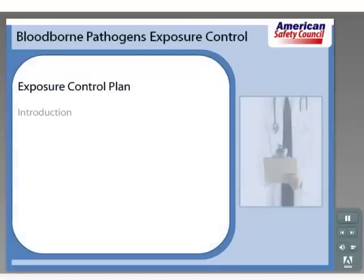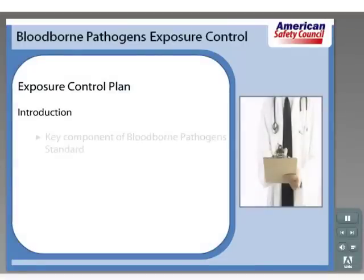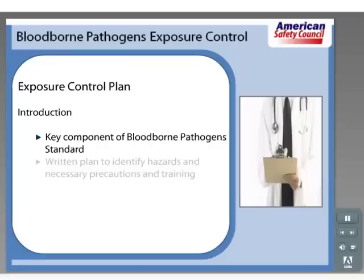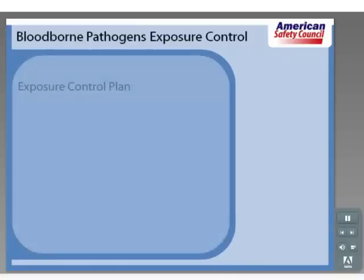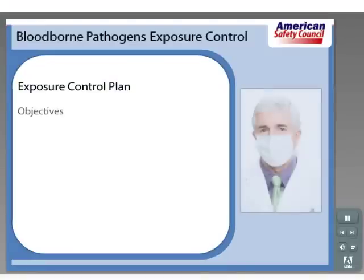An exposure control plan is the key component of OSHA's bloodborne pathogen standard. The exposure control plan requires employers to identify employees who will require training, personal protective equipment, necessary vaccinations, and other protections. In this section we will discuss creating an exposure control plan.